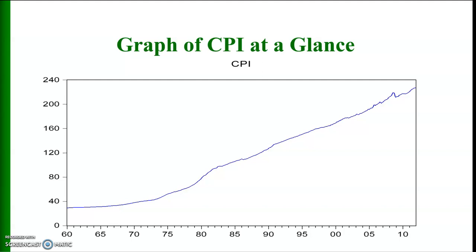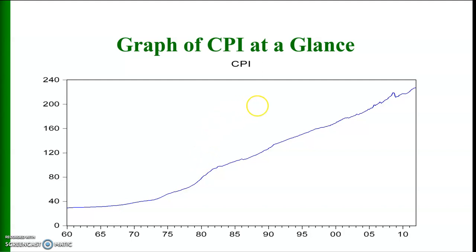Here I am showing you a graph of consumer price index at a glance. If you look at this graph, this series shows an upward trend — there is an increasing trend in this model. Consumer price index is increasing over time, so this means that this time series has a unit root, that is it is not stationary. Since this data is at level, as I mentioned in my previous videos, time series at level are usually non-stationary.